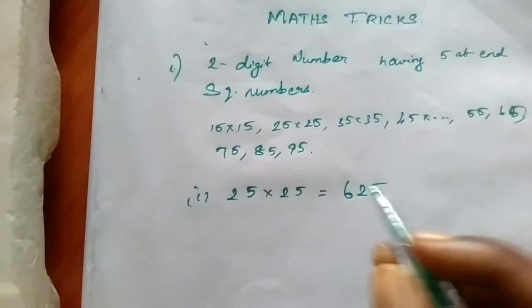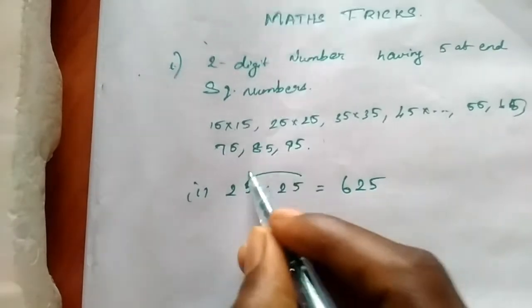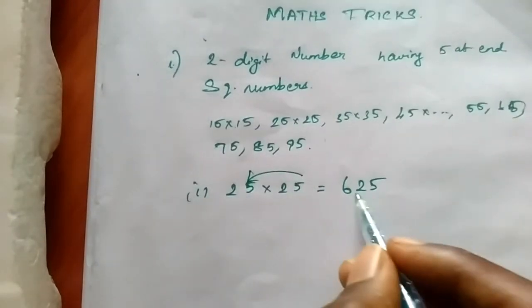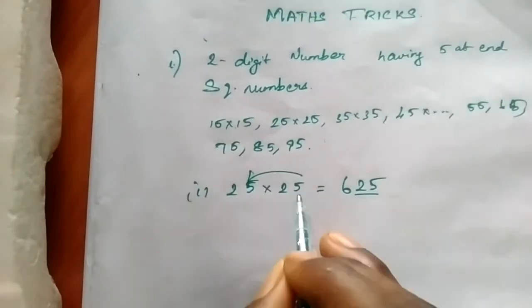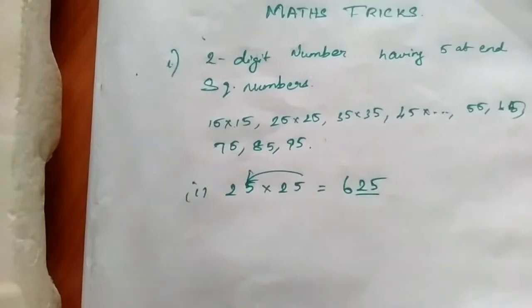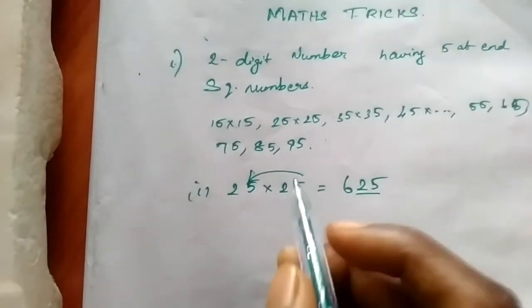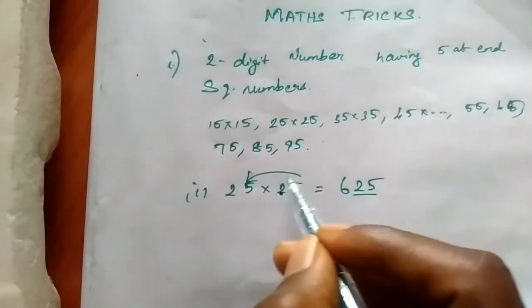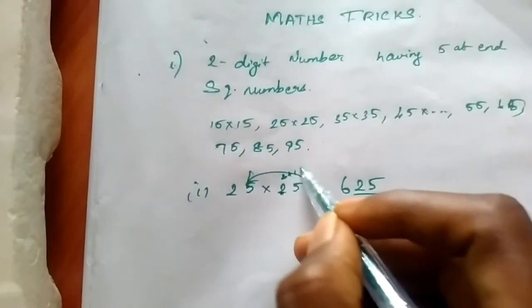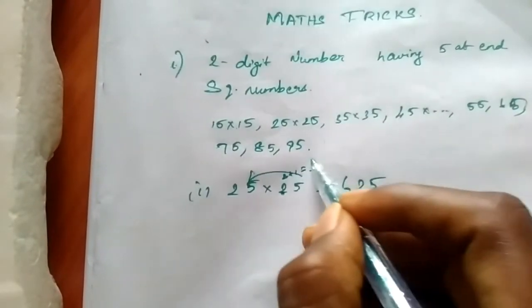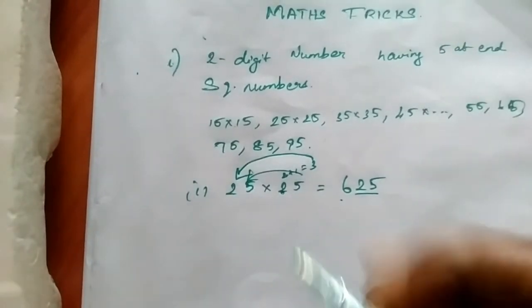Now let's see how it works. 5 x 5 is 25 — that's the last part. Now take the tens digit: 2 plus 1 is equal to 3, and 3 x 2 is 6. So the answer is 625.